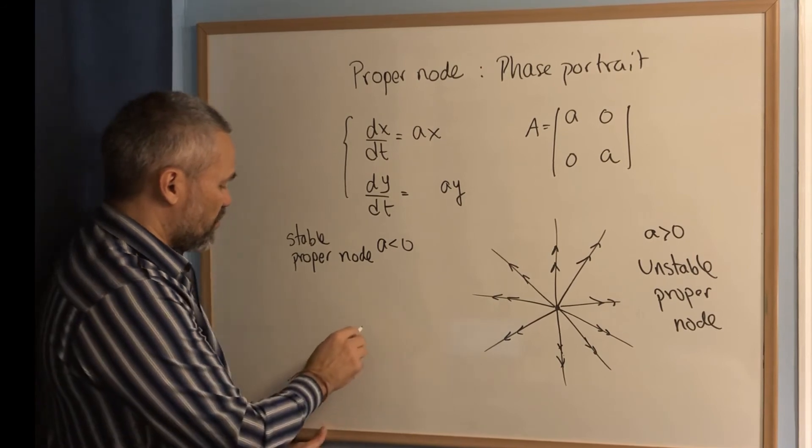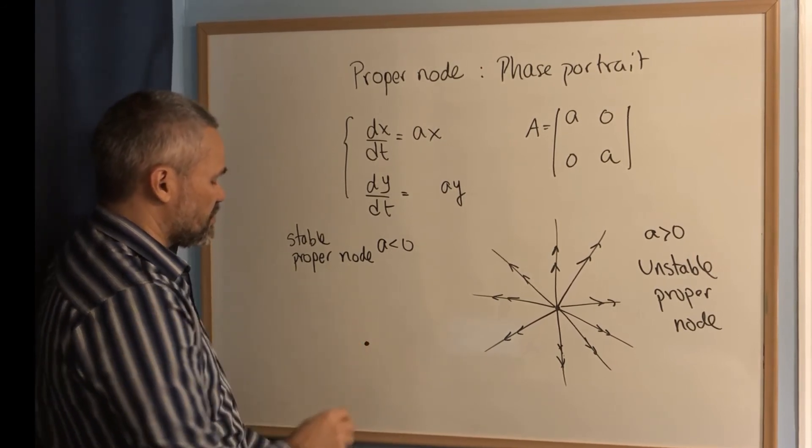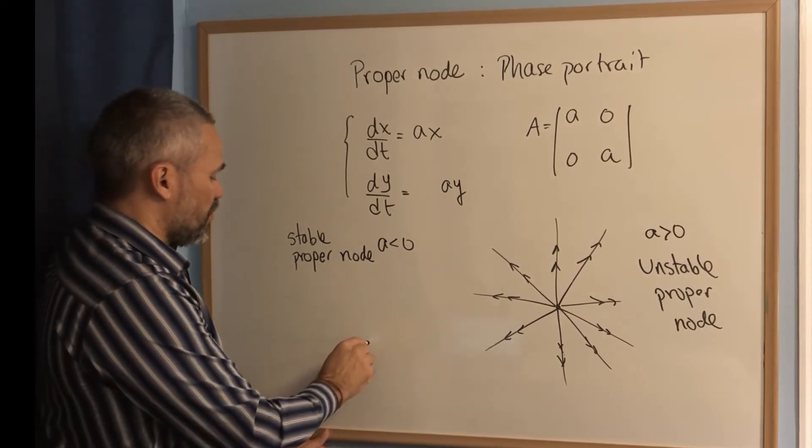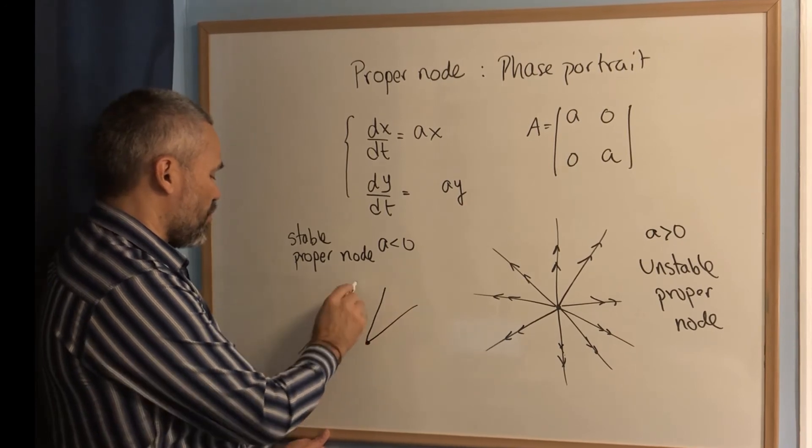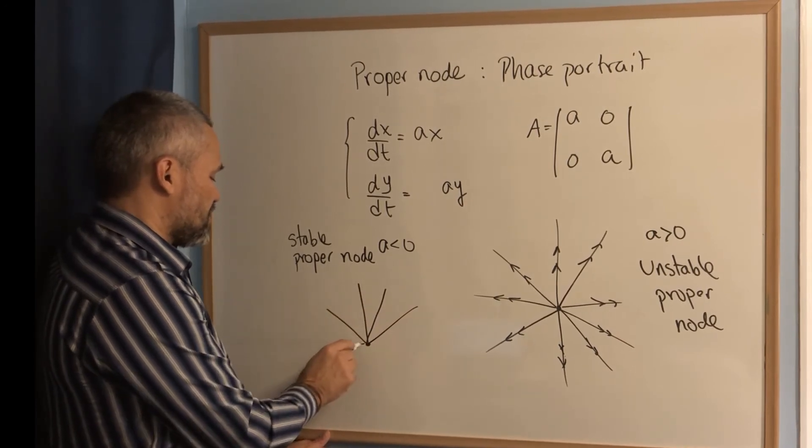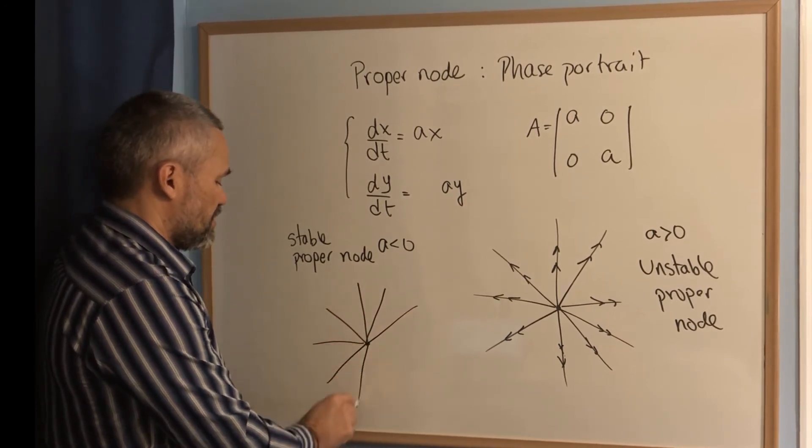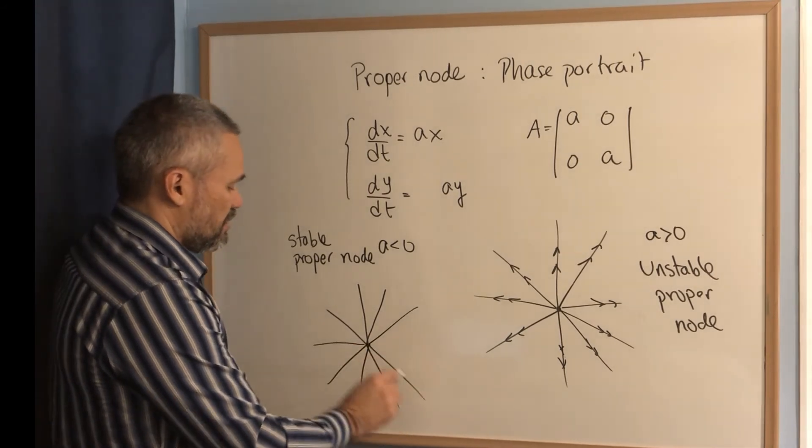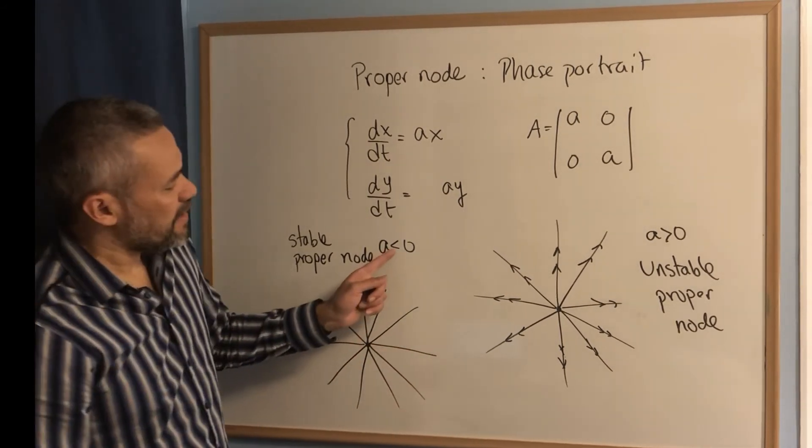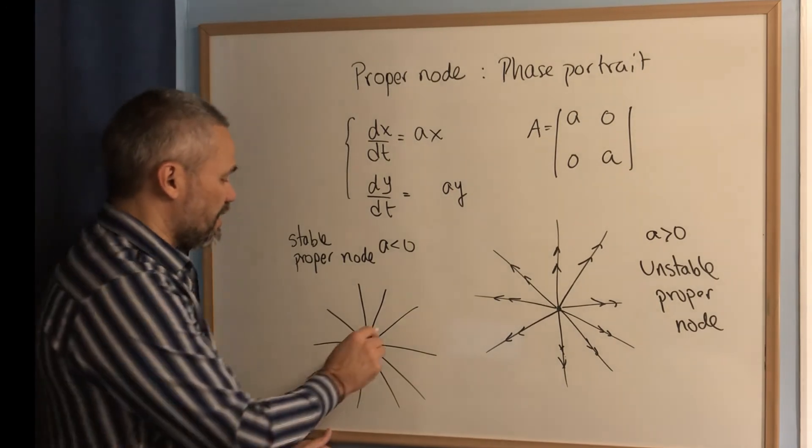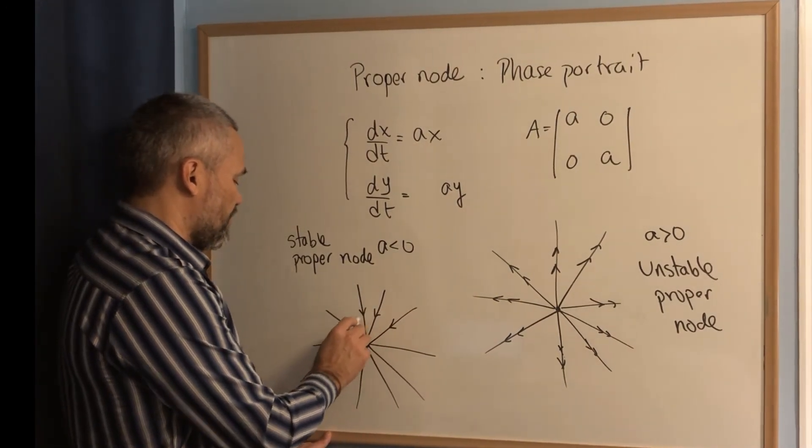And the phase portrait goes like this. This is the zero, zero, which is an orbit on its own. All the other orbits are semilines. And since a is smaller than zero, then the arrows point toward the origin.